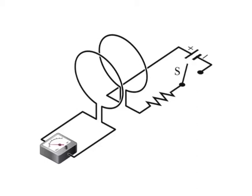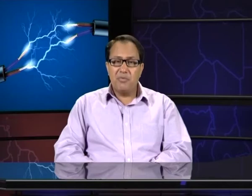The induced EMF and induced current in these experiments are apparently caused when something changes. But what is that something? Faraday's law of induction: Faraday realized that an EMF and a current can be induced in a loop by changing the amount of magnetic field passing through the loop. He further realized that the amount of magnetic field can be visualized in terms of the magnetic field lines passing through the loop. An EMF is induced in the loop when the number of magnetic field lines that pass through the loop is changing.